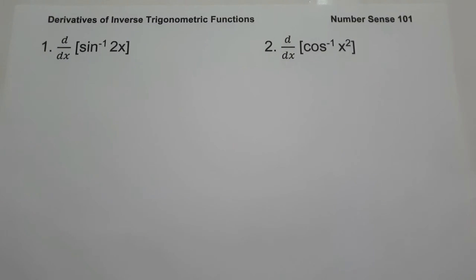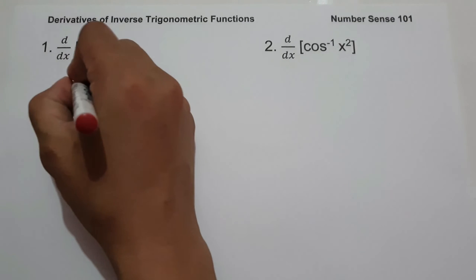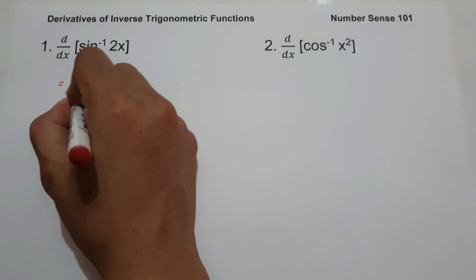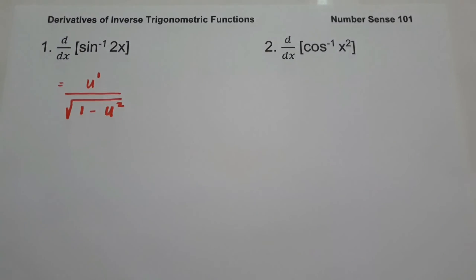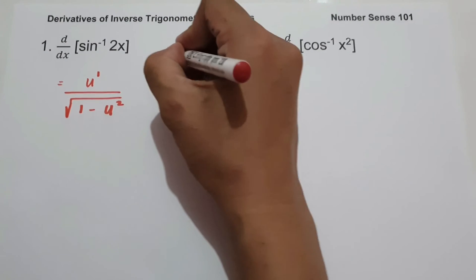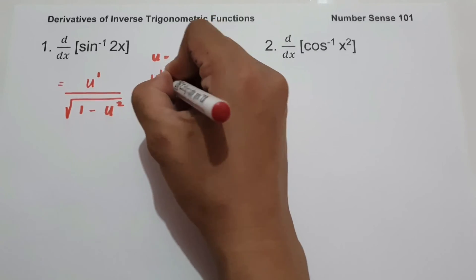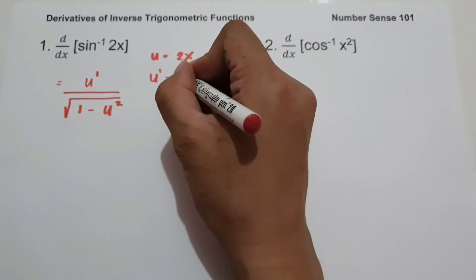On number 1, what is the derivative of arcsin 2x? The derivative of arcsin u is equal to u prime over the square root of 1 minus u squared. So let us identify first the value of u. The value of u is 2x, and u prime — the derivative of 2x — is 2.